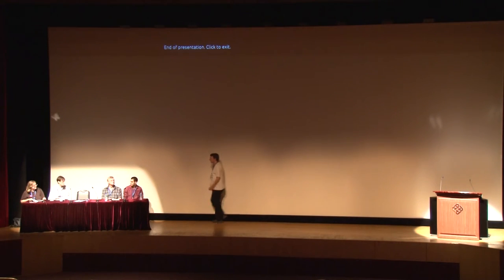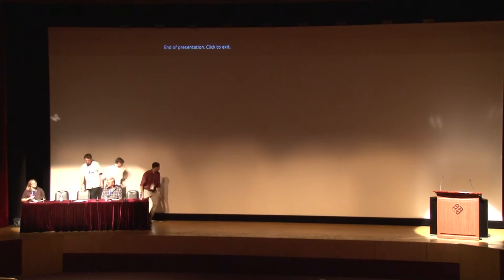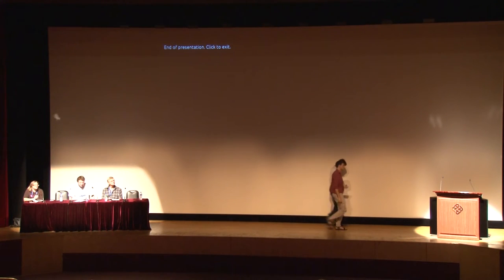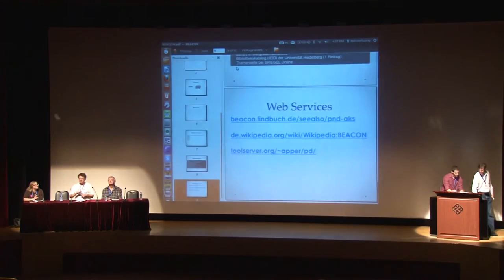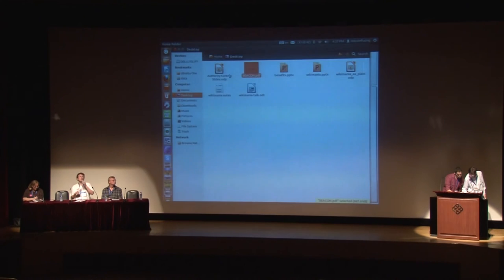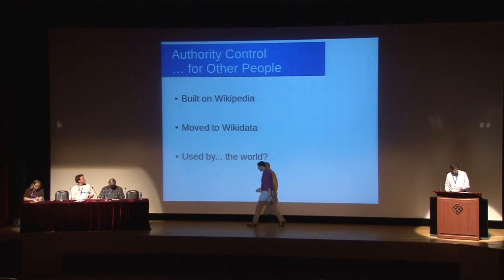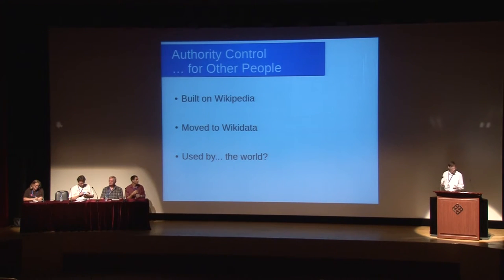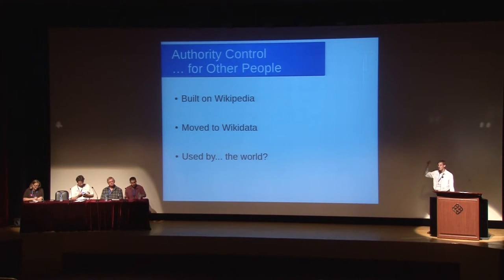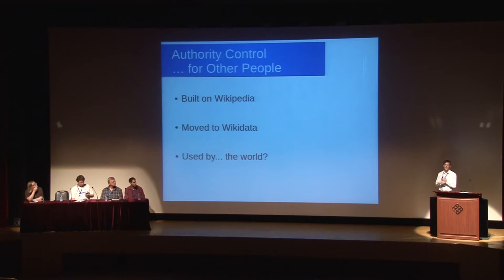Next up is Andrew Gray, who's going to talk about some ideas for future work with authority control and Wikimedia projects. I want to talk about what we can do with all this aggregated data and use it for the benefit of the outside world. We've pulled this material together on Wikipedia, and we're now moving it into Wikidata. If you look at the Wikidata properties list, we now support about 12 to 15 different authority types — all sorts of materials. We're supporting an awful lot of systems and migrating all this data in.